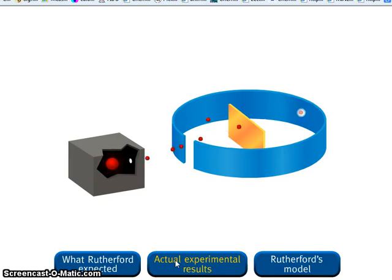This was a most surprising finding, for in Thompson's model, the positive charge of the atom was so diffuse, or spread out, that the positive alpha particles were expected to pass through the foil with very little deflection.